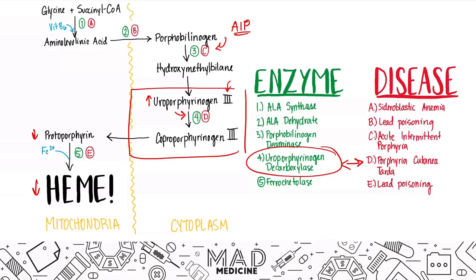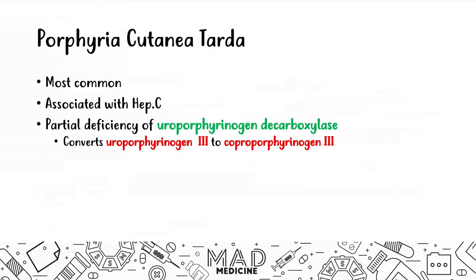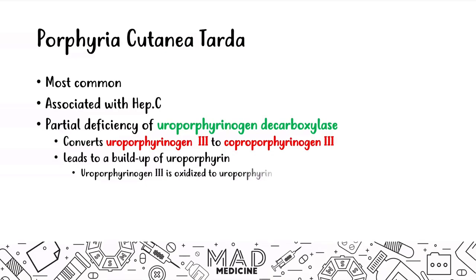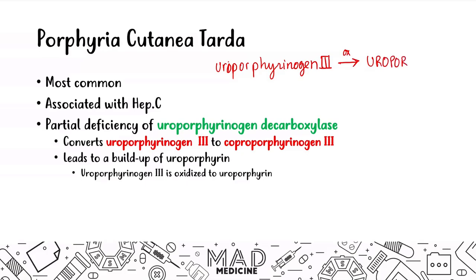In porphyria cutanea tarda, because uroporphyrinogen decarboxylase is not functioning properly, you're not going to be able to convert uroporphyrinogen 3 to coproporphyrinogen 3, and that leads to a buildup of uroporphyrin. Uroporphyrin is uroporphyrinogen 3 in its oxidized form, and that is the main molecule being elevated in porphyria cutanea tarda.